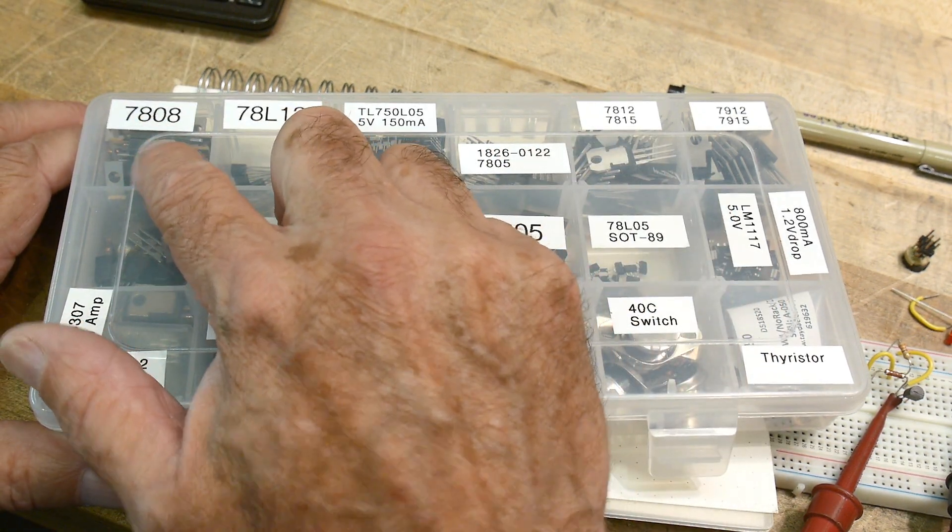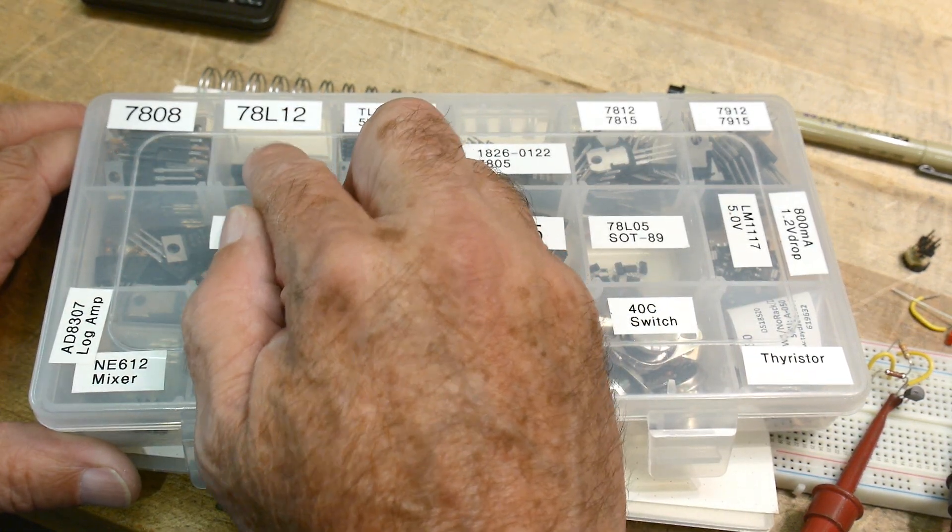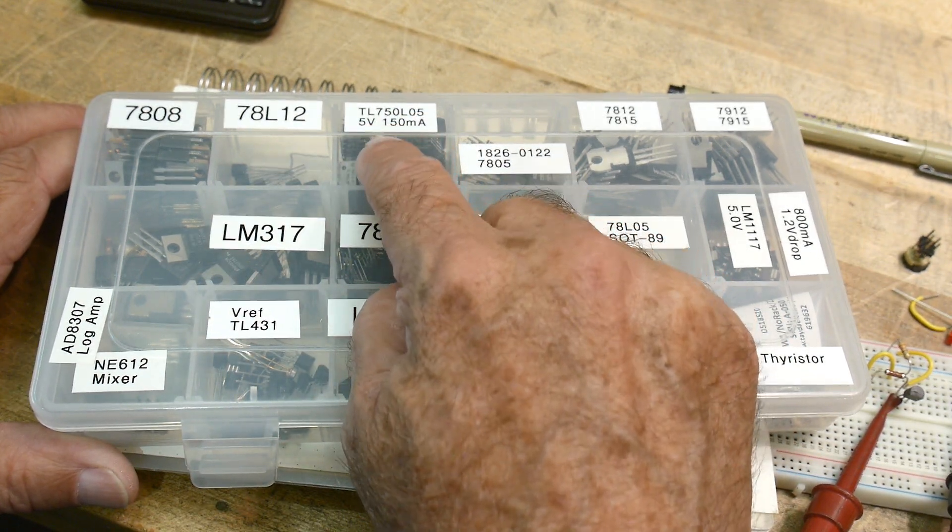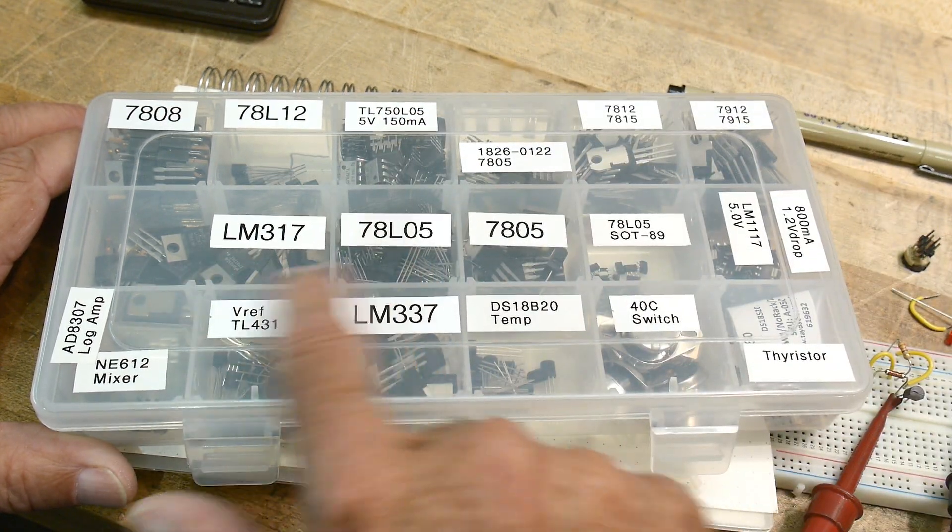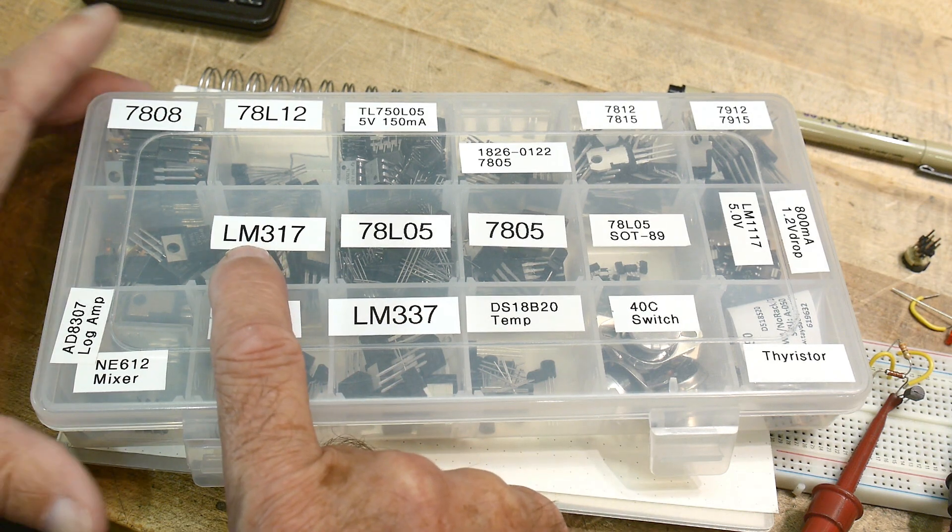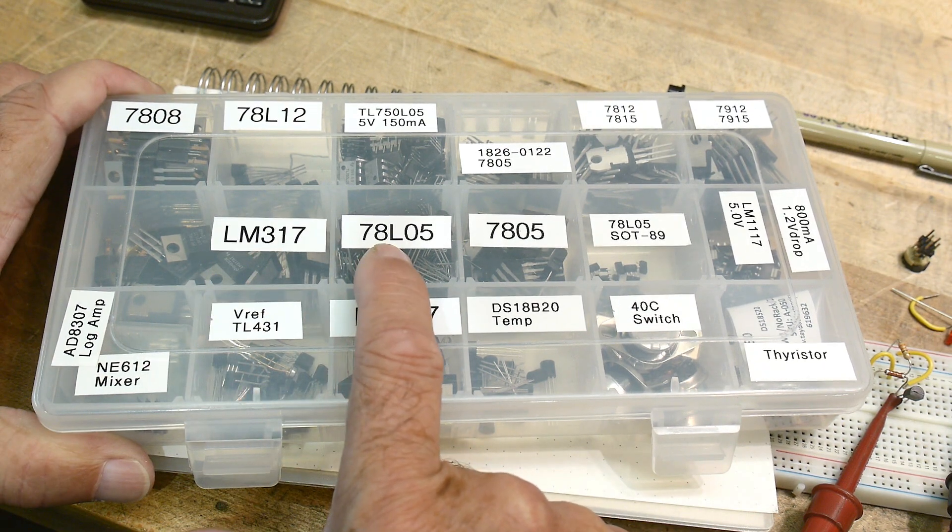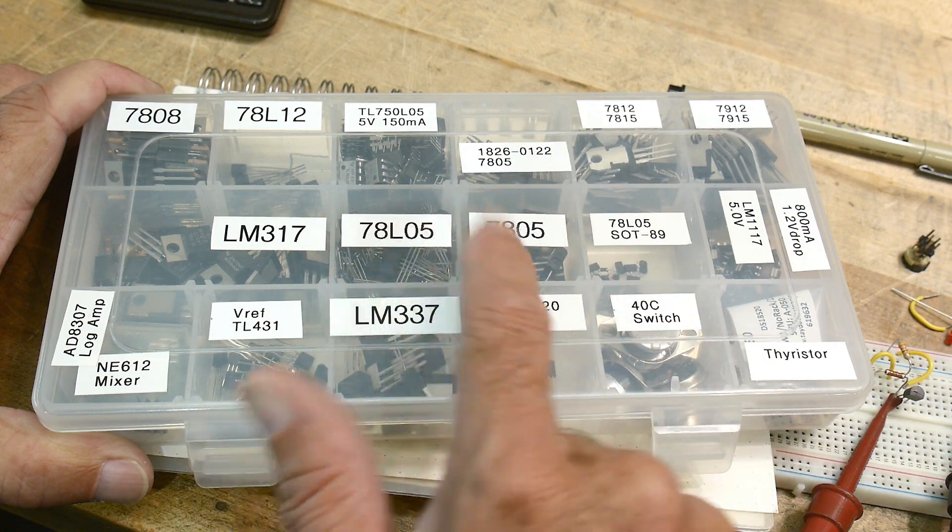I've got a bunch of them here. I've got a 7808, 78L12, here's a 5-volt jobber. Here's the standard one. So it's adjustable one. Low power, little TO92 ones.